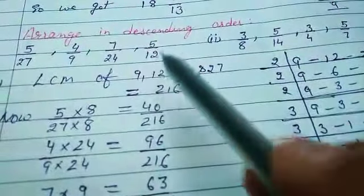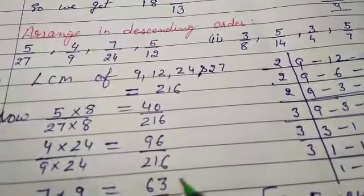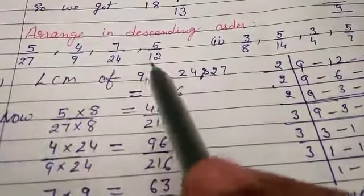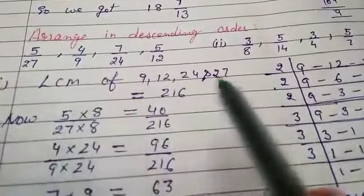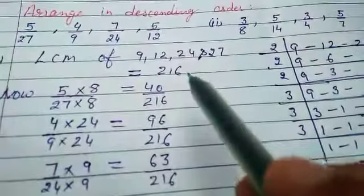Next question is arrange in descending order. There are also two parts. The first part is 5/27, 4/9, 7/24, and 5/12. First we make them like fractions by making denominators equal. We find the LCM.